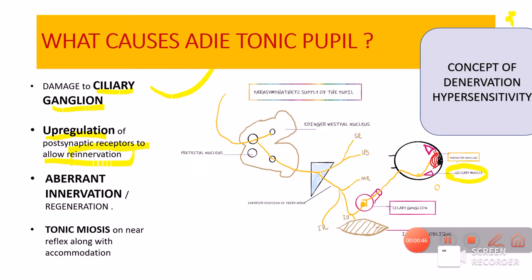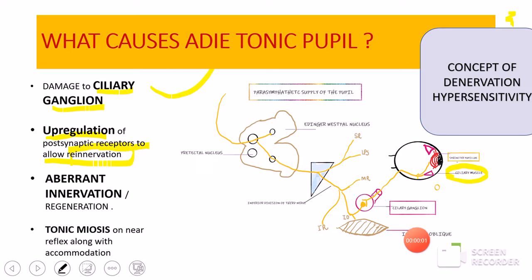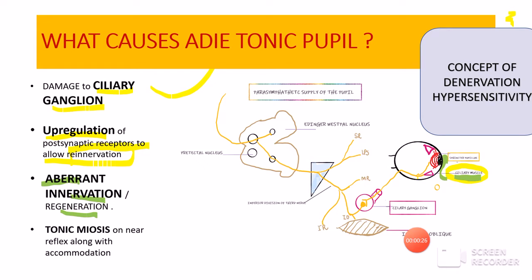The muscles will realize they are not getting adequate nerve supply, so they produce more receptors in order to receive the same amount of nerve signal. In response to denervation hypersensitivity, the nerves will start regenerating from the post-ganglionic fibers. However, the process of re-innervation is not accurate — the fibers which were intended to go to the ciliary muscle will now start going towards the sphincter pupillae. This re-innervation is abnormal and therefore it is called aberrant innervation or aberrant regeneration, as a result of which the patient will have light-near dissociation or tonic miosis.